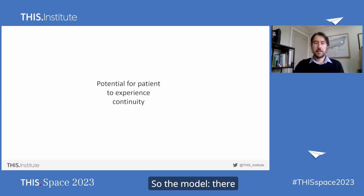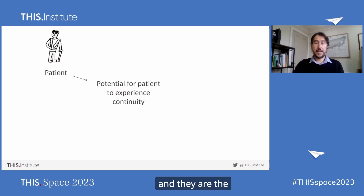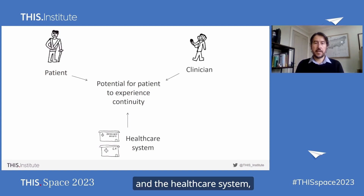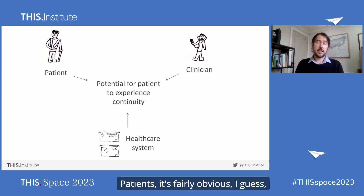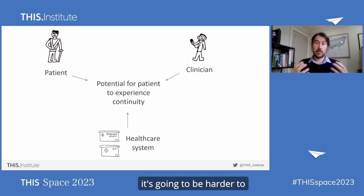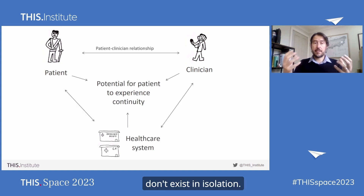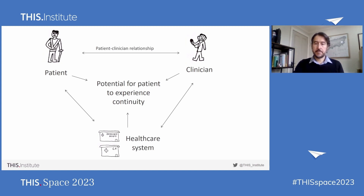There are three main factors that affect the potential for patients to experience continuity, and they are the patient, the healthcare system, and the clinician. I'm just going to touch on the patient and the healthcare system, and talk mainly about the clinician, mainly because it's the least researched aspect. Patients — if you have a patient that's more complex with more complex health needs, it's going to be harder to experience continuity. For the healthcare system, there are multiple elements: the appointment system and the type of coordination mechanisms in place. These things don't exist in isolation — the patient interacts with the clinician, with the healthcare system, and they all interact with one another.